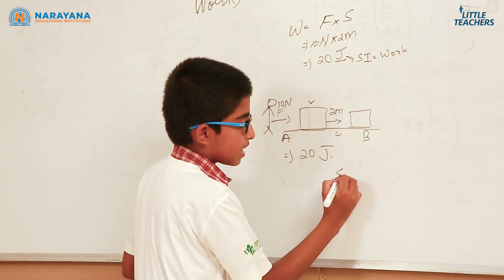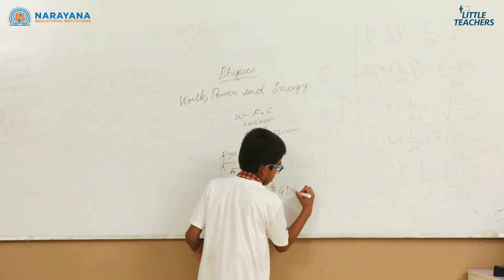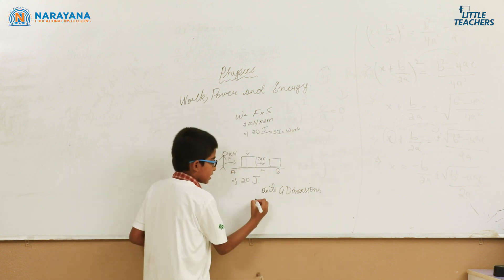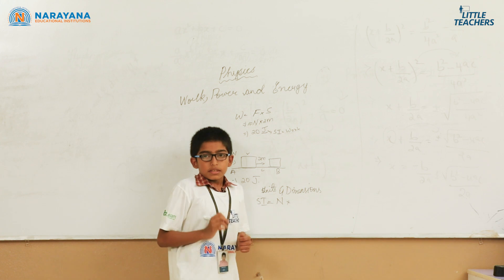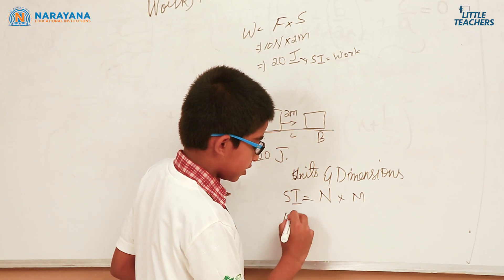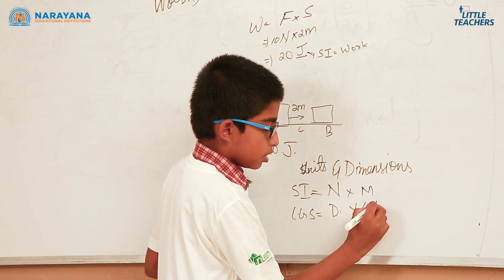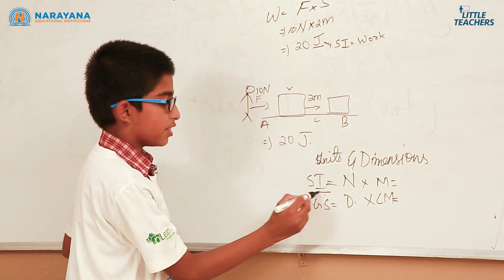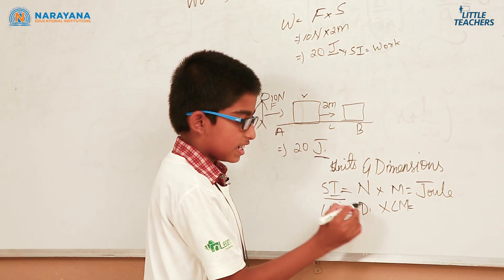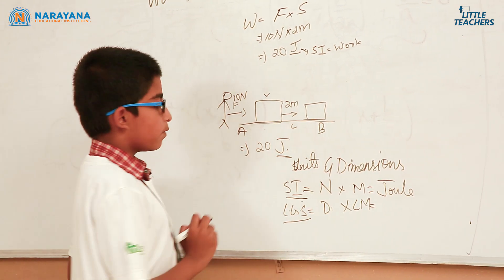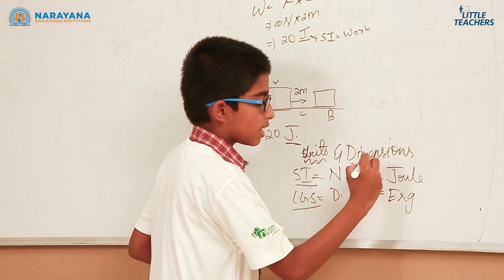Let us learn about the SI units and dimensions of work. The SI unit of force is Newton and the SI unit of displacement is meter. The CGS unit of force is dyne and the CGS unit of displacement is centimeter. When we multiply Newton by meter, we get the SI unit of work, that is Joule. When we multiply dyne by centimeter, we get the CGS unit of work, that is erg. Here we have completed all the units and dimensions of work.